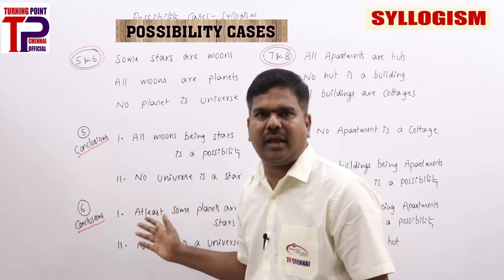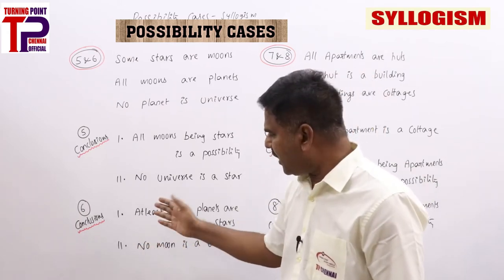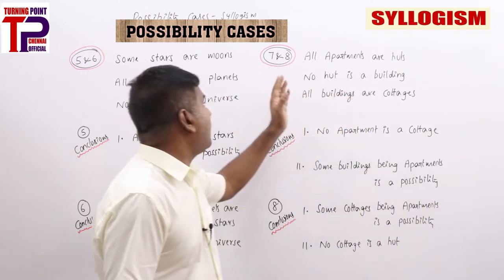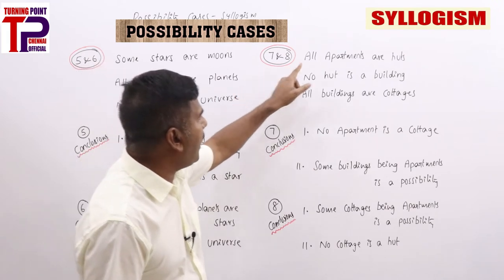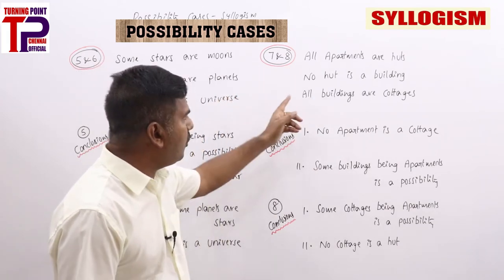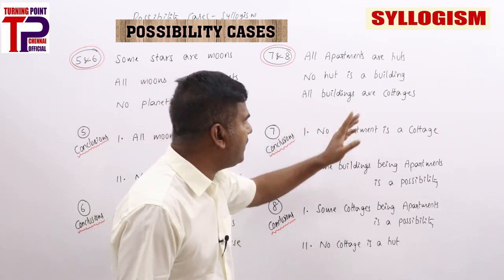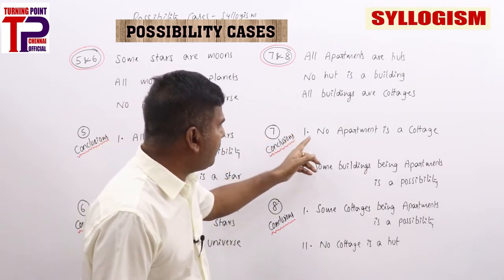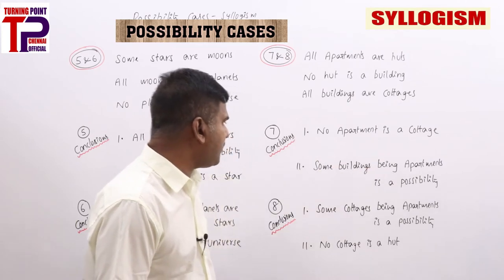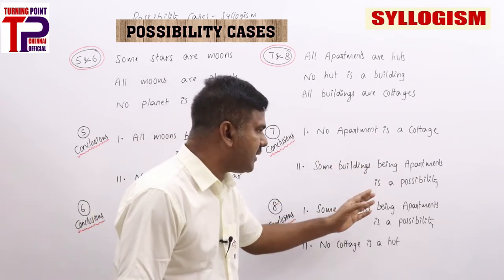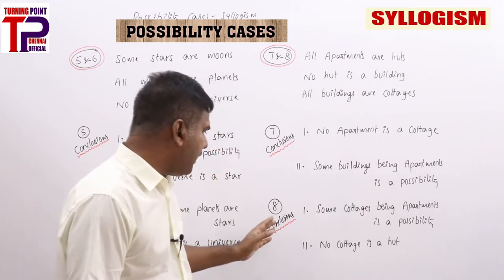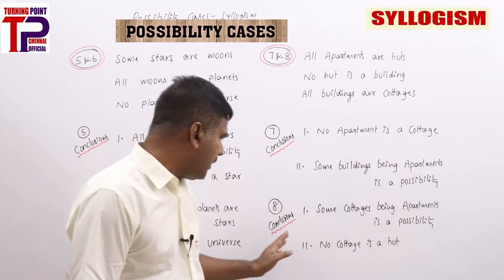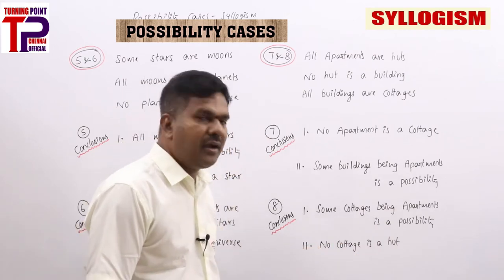Questions 7 and 8 share statements: all apartments are huts, no hut is a building, all buildings are cottages. Question 7 conclusions: (1) no apartment is a cottage, (2) some buildings being apartments is a possibility. Question 8 conclusions: (1) some cottages being apartments is a possibility, (2) no cottage is a hut. Answers: 5th, both follows for Q6; 4th, none follows for Q7; 1st, only one follows for Q8.